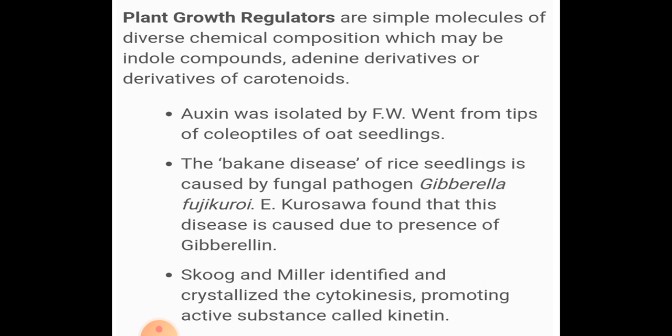Next, let's talk about how the gibberellin hormone was discovered. There is a disease called Bakanae disease, also known as foolish seedling disease of rice. The rice seedlings are affected by a fungal pathogen called Gibberella fujikuroi. Scientist E. Kurosawa reported symptoms of this disease. When uninfected rice seedlings were treated with sterile filtrate of this fungus, the disease symptoms appeared. The active substance was later identified as gibberellic acid.